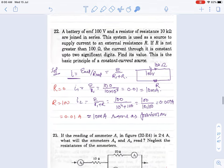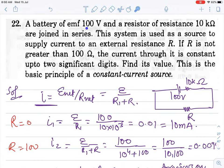Moving to question 22: Battery of EMF E, resistance r in series. This system is used as a source to supply current to external resistance R. If R is not greater than 100 ohm, the current through it is constant up to two significant digits. Find the value of current. This is the basic principle of constant current source.